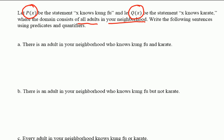The first one says there's an adult in your neighborhood who knows kung fu and karate. Well, there exists an x, right? An x is somebody, as we know, who lives in the neighborhood, who's an adult, such that P(x) and Q(x).